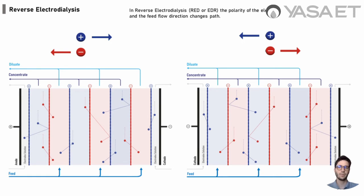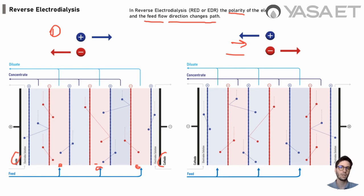Another solution offered is electrodialysis reversal, where the polarity of the electrodes switches and the feed flow direction also changes. This is very useful because it avoids calcification and scaling problems by switching the flow and polarity on both the anode and cathode but also on the membranes themselves. In the first picture on the left, the feed flows through the channels while the anode is on the left and cathode on the right, with diluate and concentrate flowing from the top. On the other side, we switch the polarity so the direction of the ions is changed and the feed has also switched to different membrane chambers.